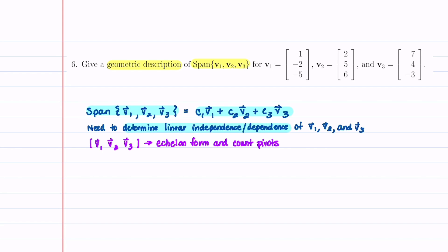The way we're going to do that is we're going to take a matrix, put vectors V1, V2, and V3 in it, then put that matrix in echelon form, and count the pivots. Let me show you how to do this.